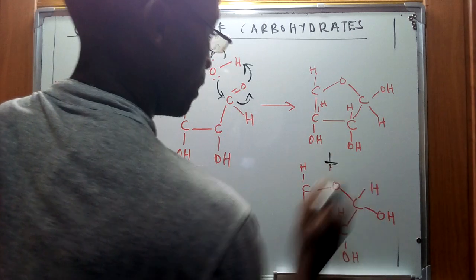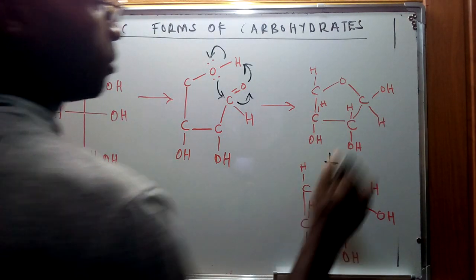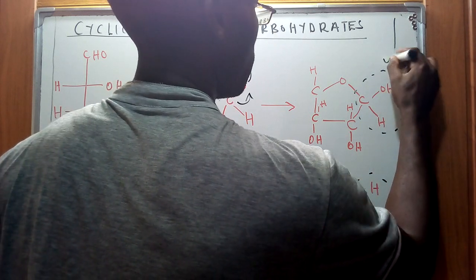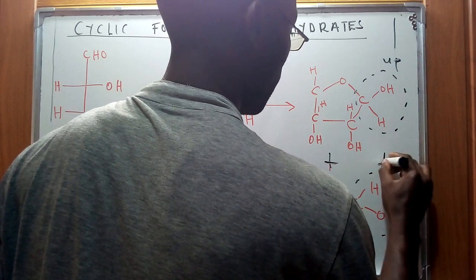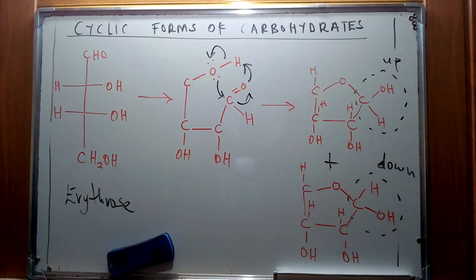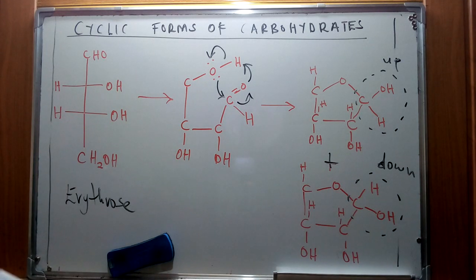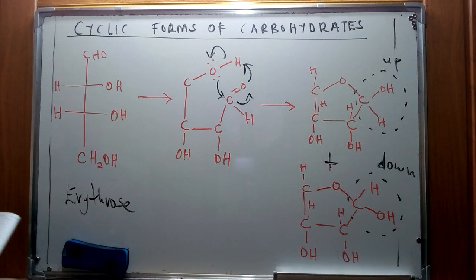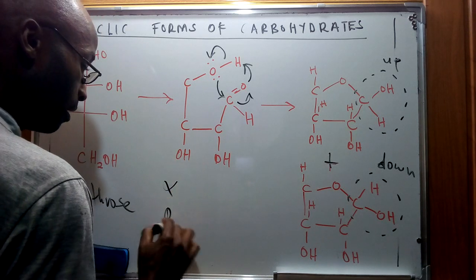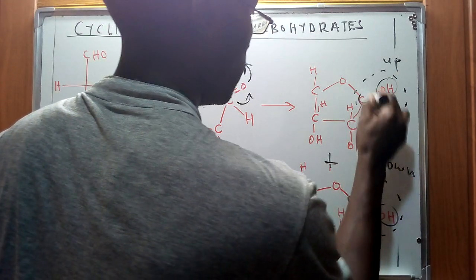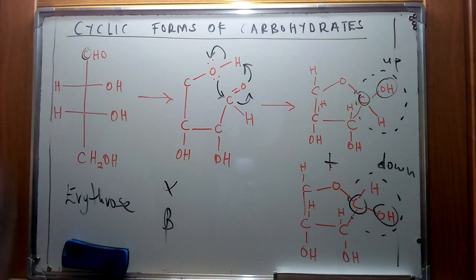From this rearrangement we're going to have a range of two specific products. The difference between the two is that one has the OH group pointing up and the other pointing down. We use the concept of alpha and beta to denote the position of this specific OH group. This anomeric carbon is derived from the functional group of the aldehyde indicated on the board.